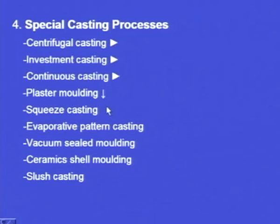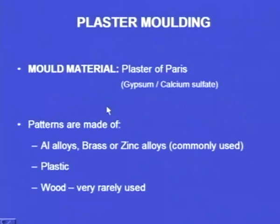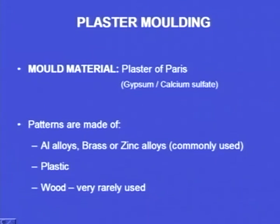Today let us see plaster moulding. Here the mould material is plaster of Paris, made up of gypsum or calcium sulphate. In conventional casting the mould material is sand; in die casting it is a metal or alloy; in investment casting it is wax. Here the mould material is plaster of Paris.